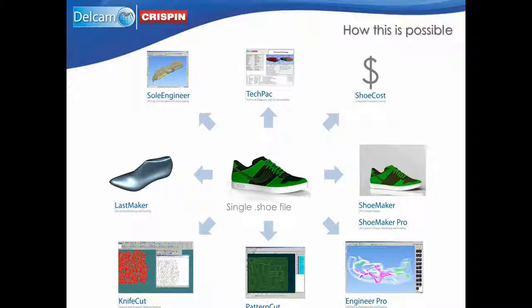Each piece of software automatically extracts the data it needs from the .shoe file so you don't need to worry about which file to open at each stage of the process. For example, open the file in Shoemaker and it will automatically access the 3D shoe design information required to produce a 3D model. Open the file in Delcam Crispin Engineer Pro and the software will automatically use the 3D shoe design to generate an accurate 2D pattern so you only need to add the finishing touches.